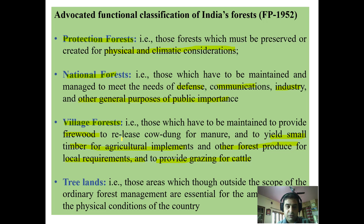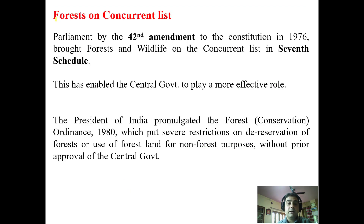Then there was another category: tree lands. These are more or less a forest crop which fall outside the scope of ordinary forest management but are essential for amelioration of physical conditions of the country. You can see these tree lands today occurring in the form of trees outside forests in present times, maintained for amelioration of physical conditions.